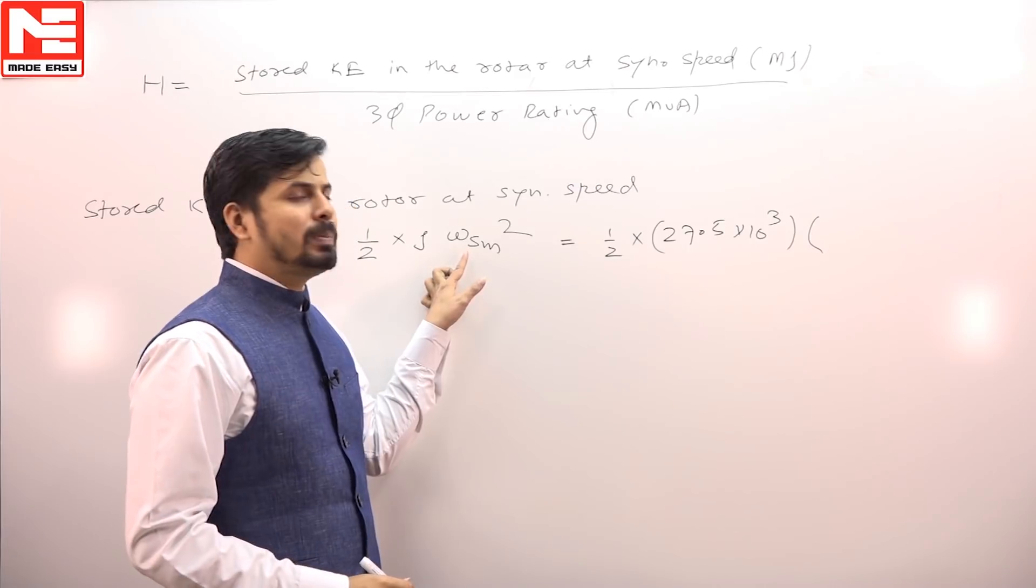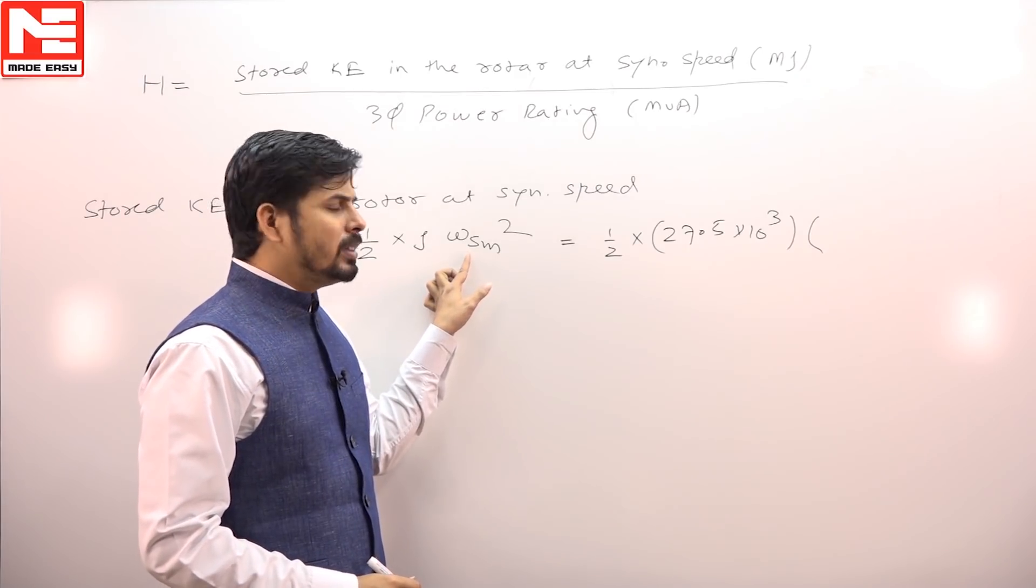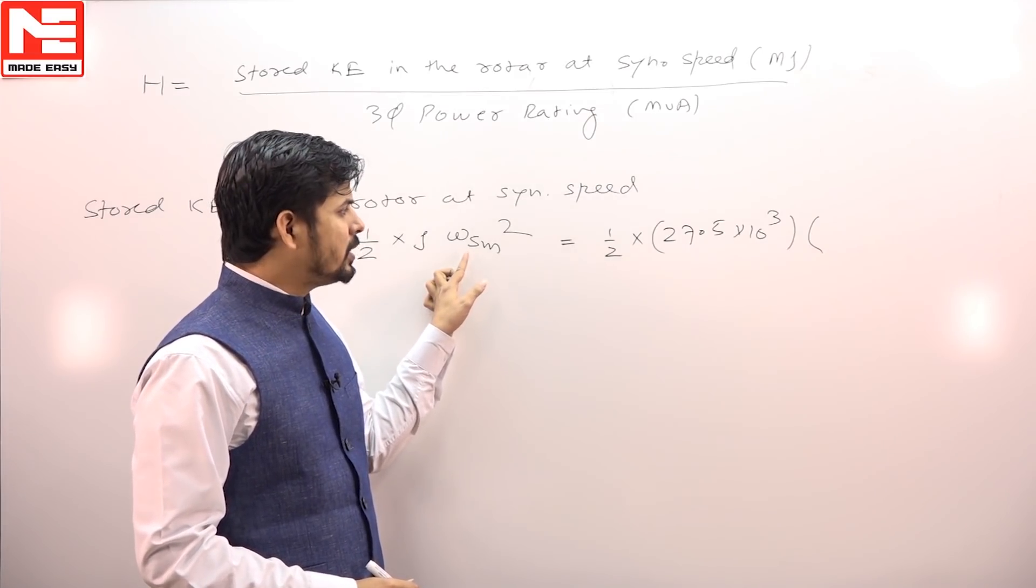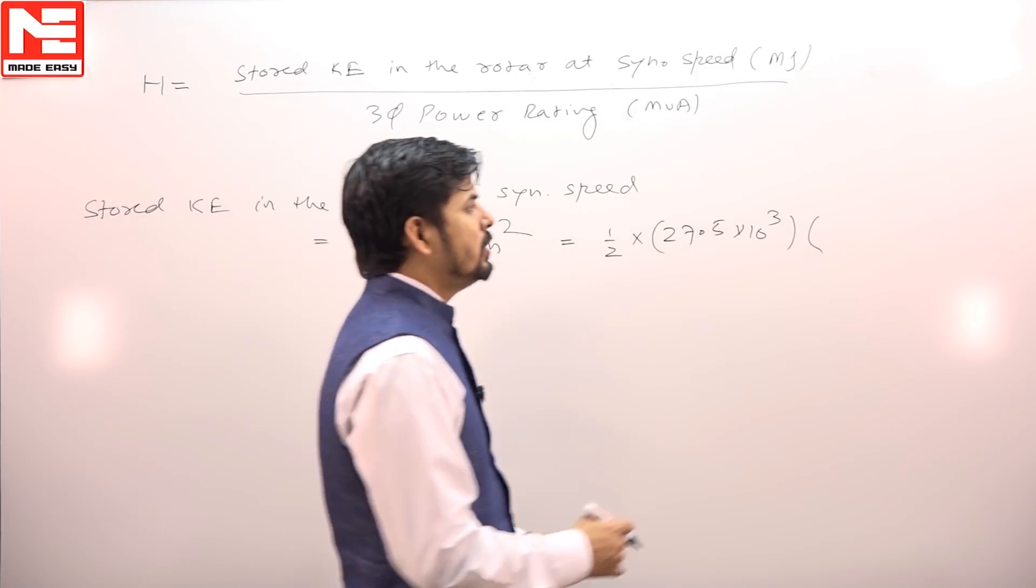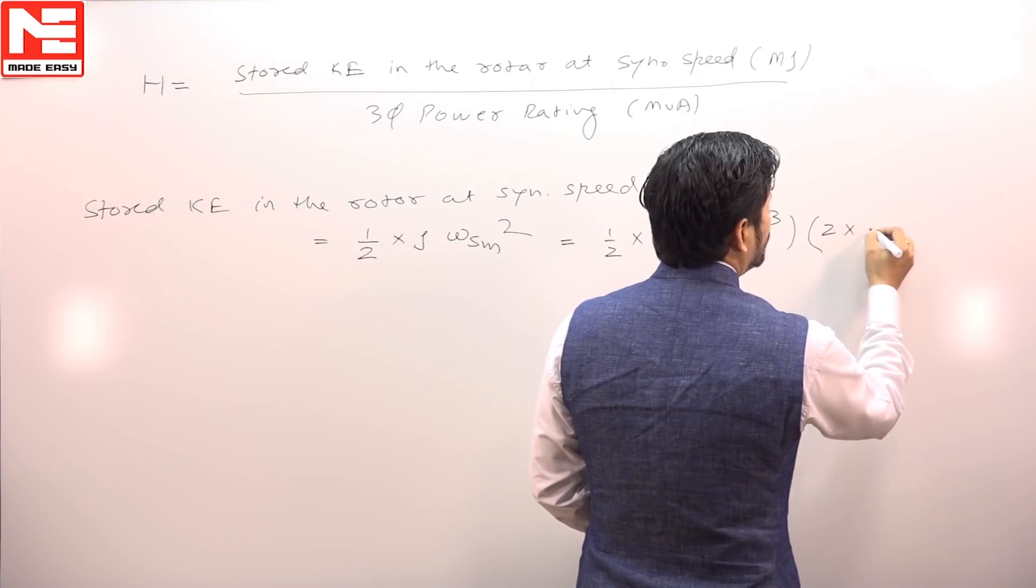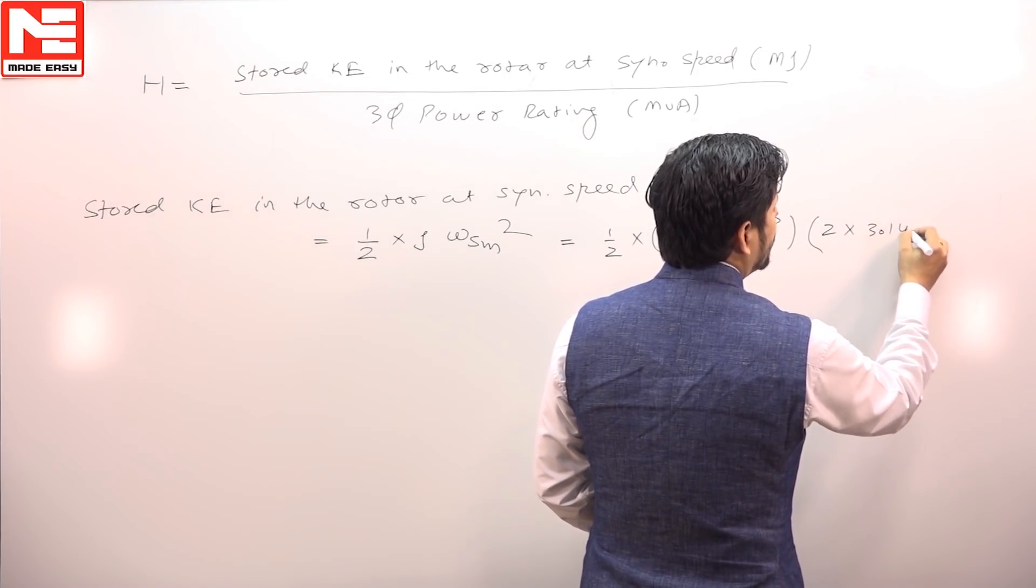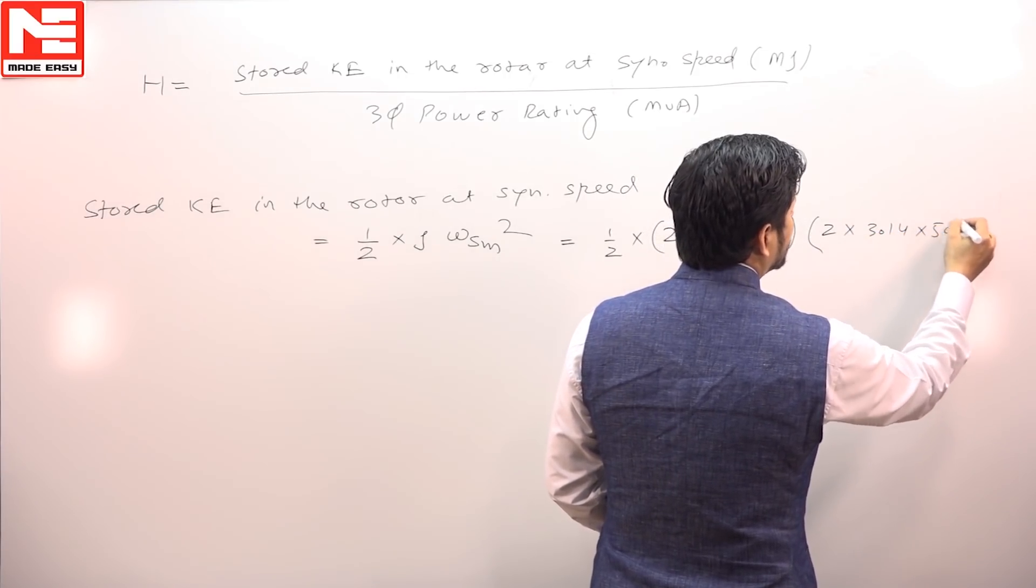And omega_sm, the synchronous speed in mechanical radians per second or electrical radians per second, is 2πf, which is 2 times pi which is 3.14 times f, whole square.